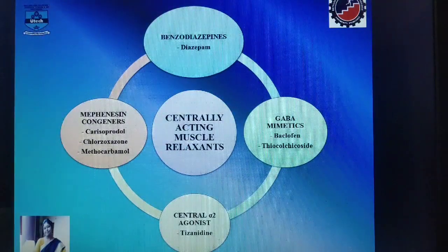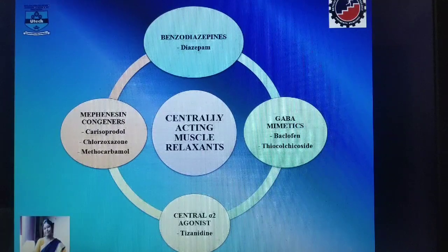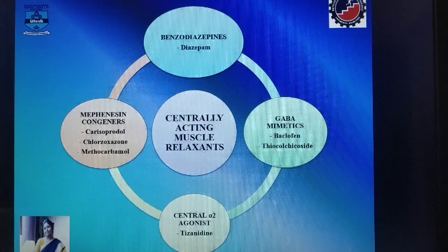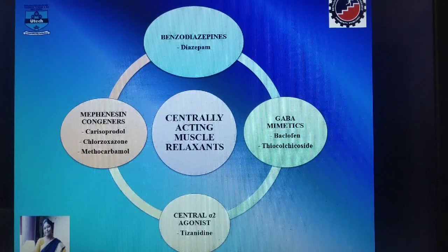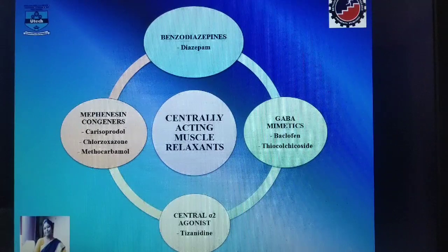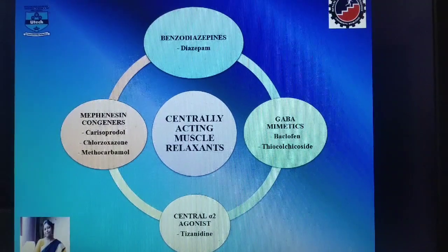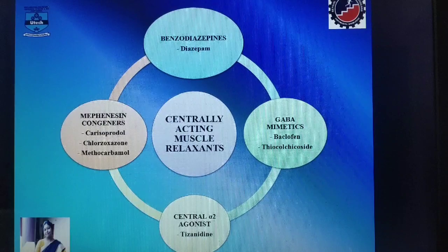Let us move on to the classification of drugs under centrally acting muscle relaxants. The first class is benzodiazepines. The second class is GABAmimetics, that is baclofen and thiocolchicoside. The third group is central alpha-2 agonists, that is tizanidine. And the last group is mephenesin congeners; the drugs are carisoprodol and methocarbamol.